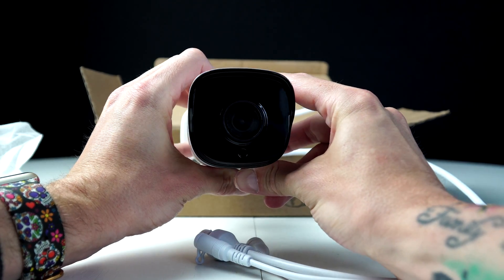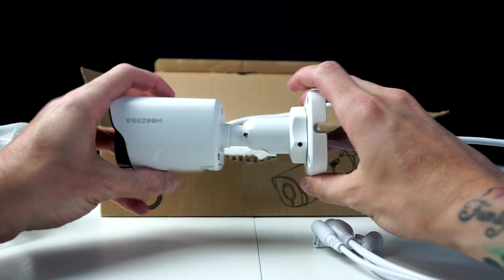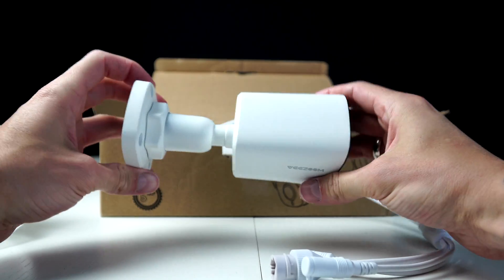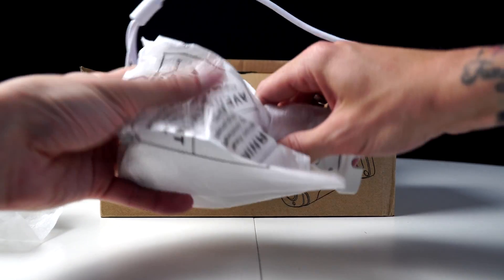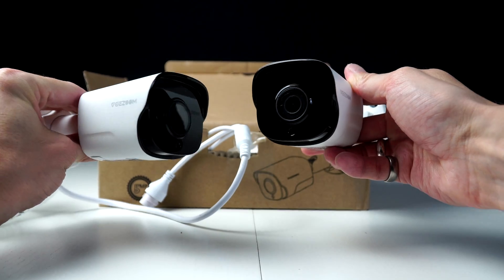Here we have the barcode on the bottom, which we'll scan when setting up our cameras on the app. These cameras have infrared light to see in the dark up to 100 feet. It has a built-in mic. It also has a micro SD card slot, and the maximum SD card that you can use is a 256 gigabyte, which is not included.